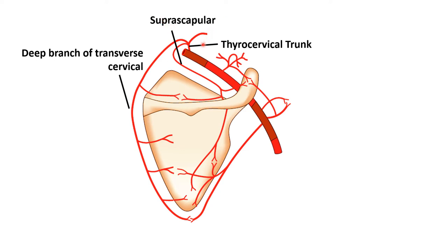The second artery participating in the anastomosis around the body of the scapula is the deep branch of the transverse cervical artery, also a branch of the thyrocervical trunk from the first part of the subclavian artery. This artery runs along the medial border of the scapula and sends branches into the fossae. We can see anastomosis between branches of the suprascapular artery and the transverse cervical artery, and in the infraspinous fossa, anastomosis between the deep transverse cervical and a branch from the third part of the axillary artery.